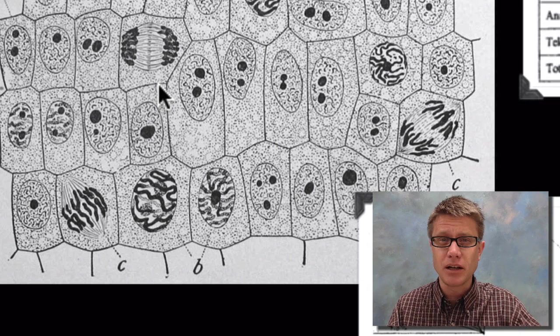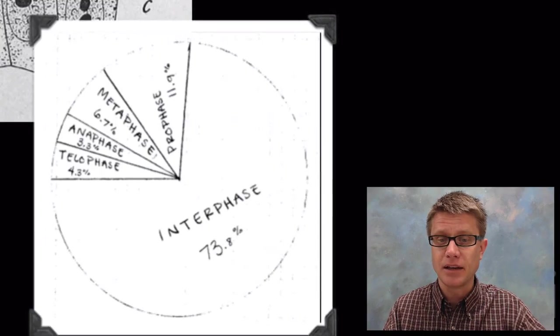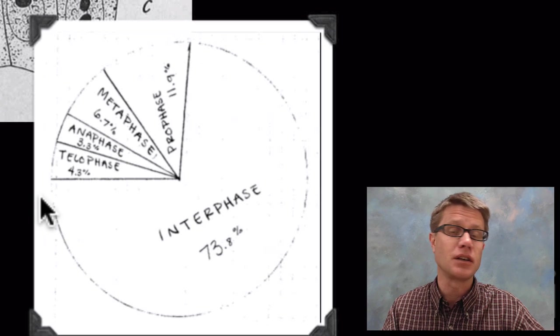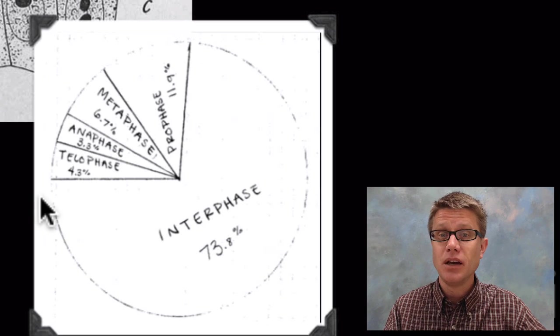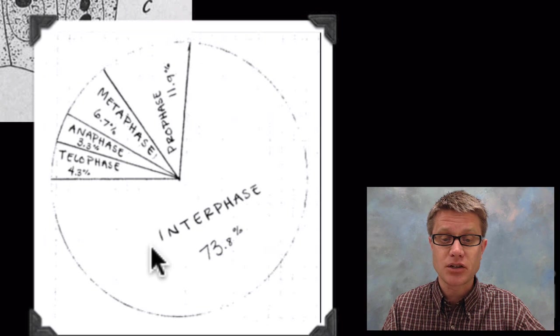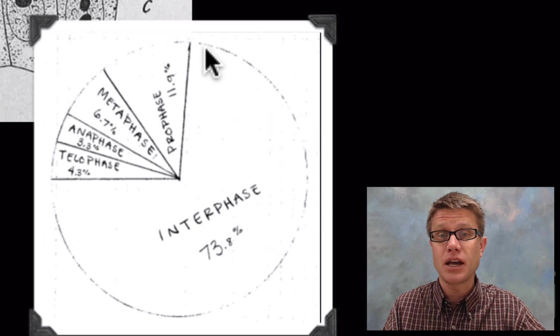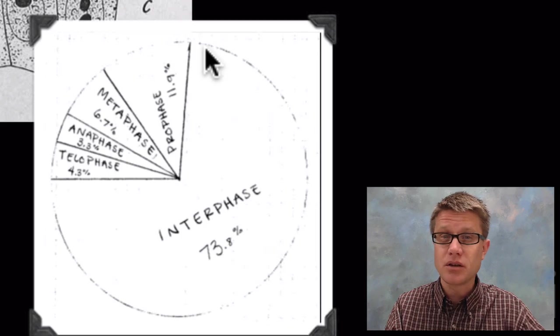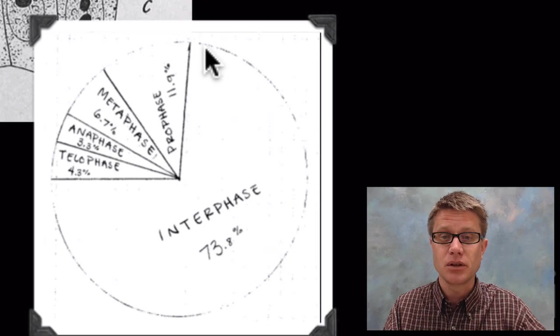What you can do is count all the cells under the microscope. This is our class data, and this is a pie chart of that. What you'll find is they spend most of their time in interphase, and that's going to really mirror the cell cycle. They're spending most of their time actually growing, copying their DNA. That whole splitting of the nuclei and then cytokinesis goes really quickly.